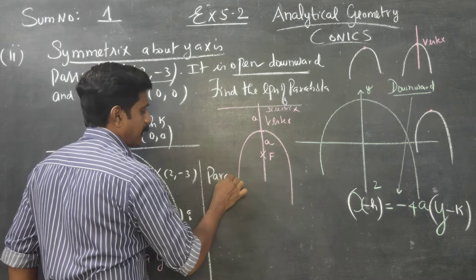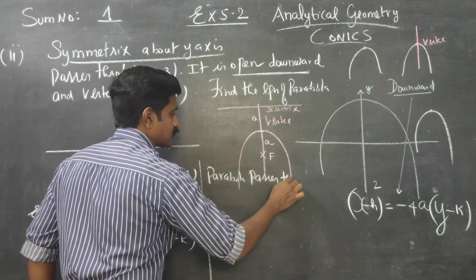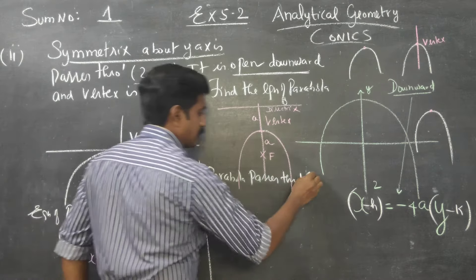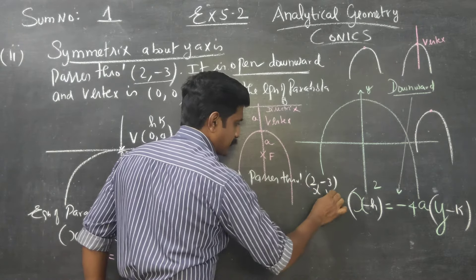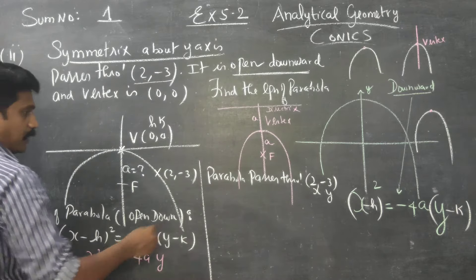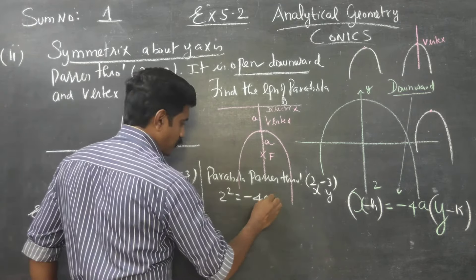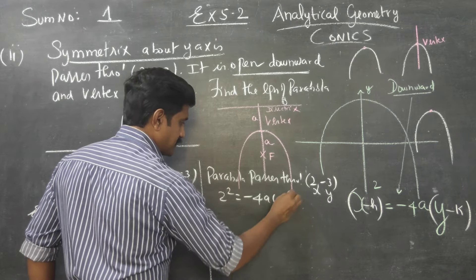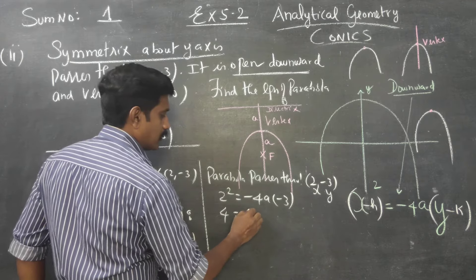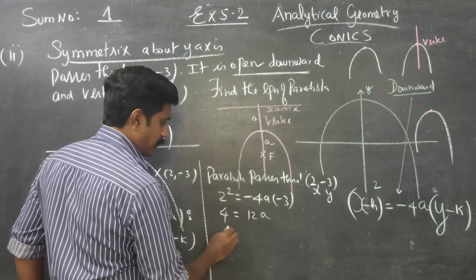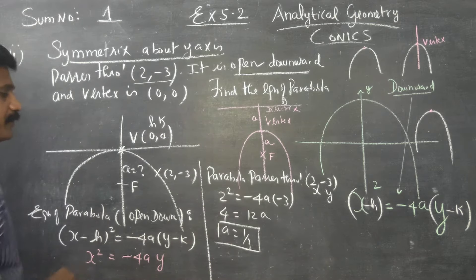The parabola passes through the point (2, minus 3). Substituting x equals 2 and y equals minus 3: 4 equals 12a, therefore a equals 1 by 3.